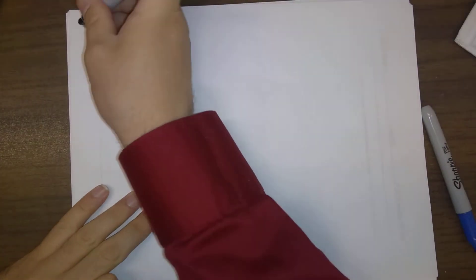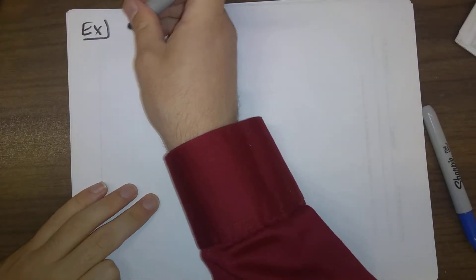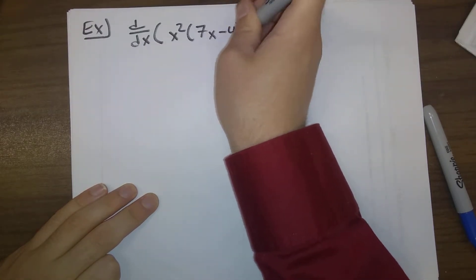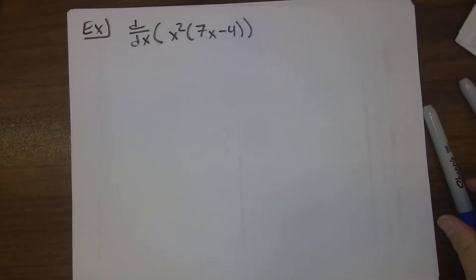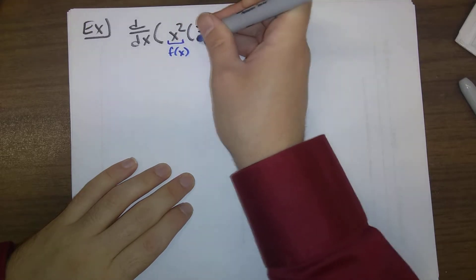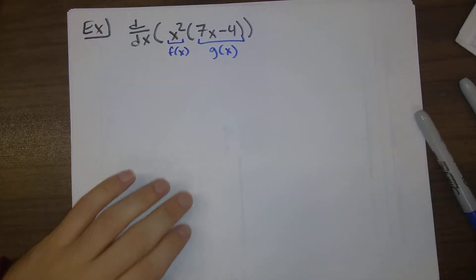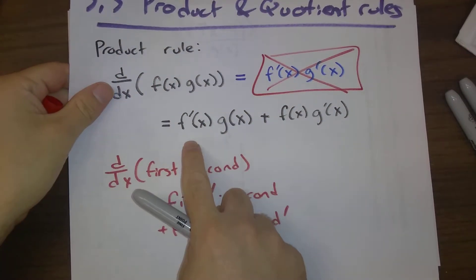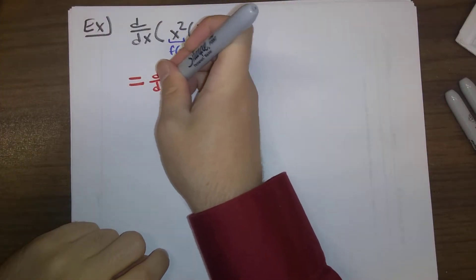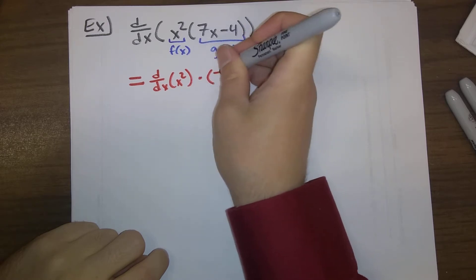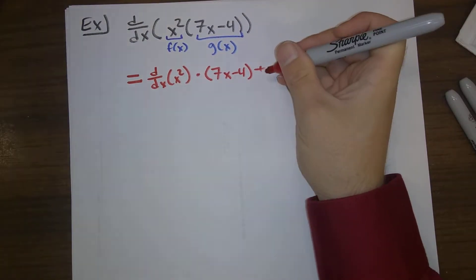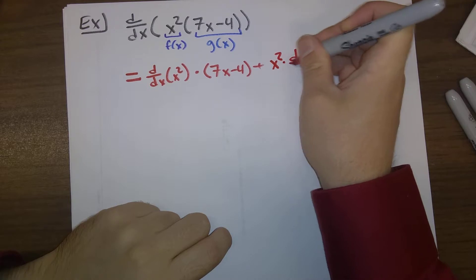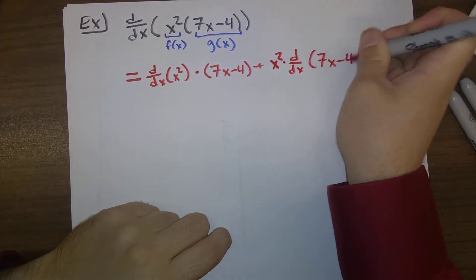Here is an example. Suppose that we have to take the derivative of x² times (7x - 4). What we can do here is, here is f(x), here is g(x). This derivative ends up being derivative of the first times the second. So derivative of x² times the second plus the first times the derivative of the second.